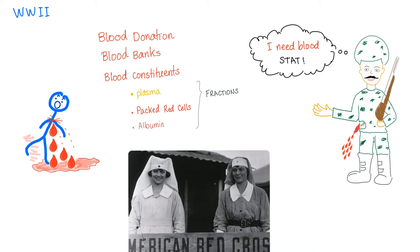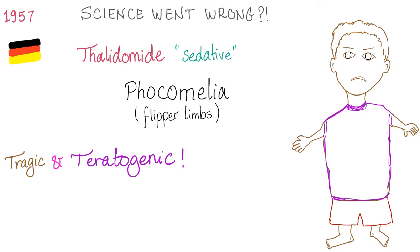During World War II, blood donations became very common and the American Red Cross worked actively to supply soldiers with blood banks. Then we developed blood constituents — so instead of giving whole blood, we could give plasma alone or packed red cells alone.